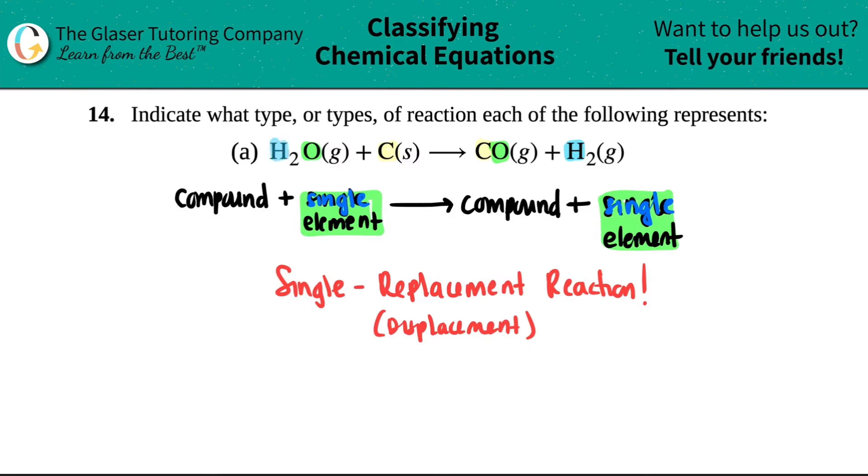Now we have to specifically look at some charges. Just know in general that all elements by themselves without a single charge up at the top - this carbon is by itself, it's a single element - all single elements by themselves have a zero charge.